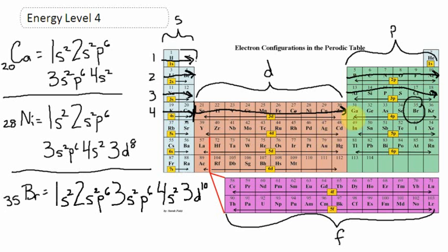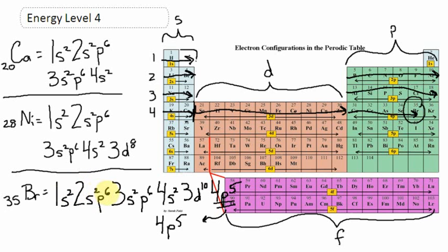Now we're back into the fours again — the fourth energy level p orbital — and I'm one, two, three, four, five deep, so that's going to be 4p5. So the electron configuration of bromine is 1s2, 2s2, 2p6, 3s2, 3p6, 4s2, 3d10, 4p5. That tells where the 35 electrons that bromine has are located.